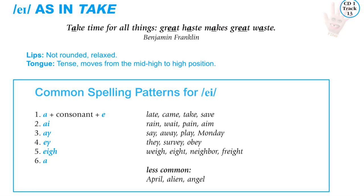A as in take. The lips are not rounded, they are relaxed, and the tongue is tense moving from mid-high to high position. Common spelling patterns: A plus consonant plus E as in late, came, take, save; AI as in rain, wait, pain, aim; AY as in say, away, play, Monday; EY as in they, survey, obey; EIGH as in weight; and less commonly the letter A as in April, alien, and angel.